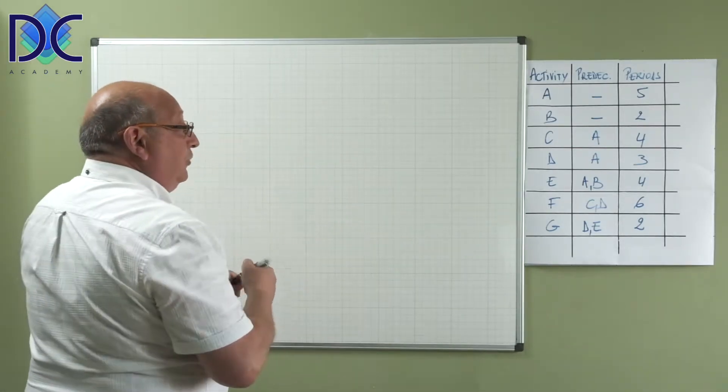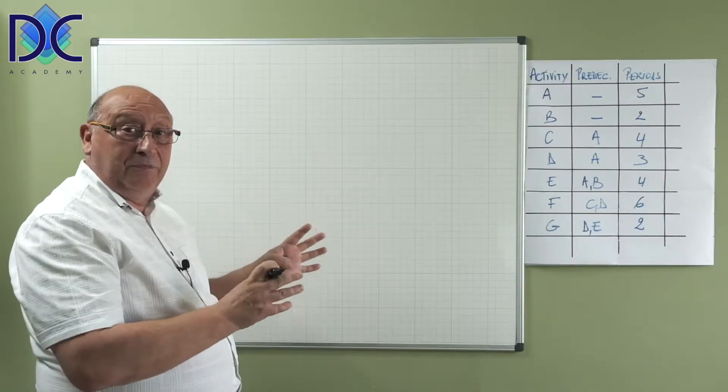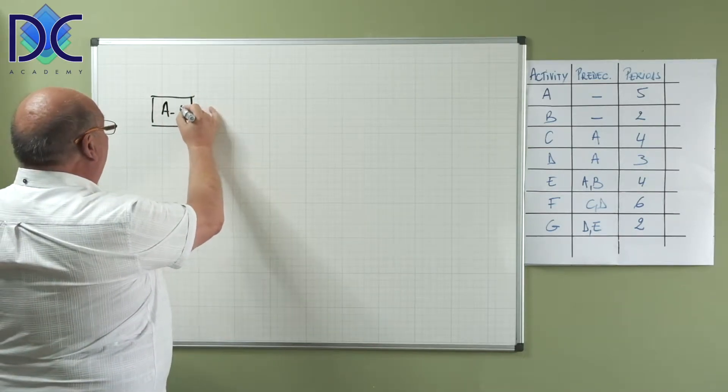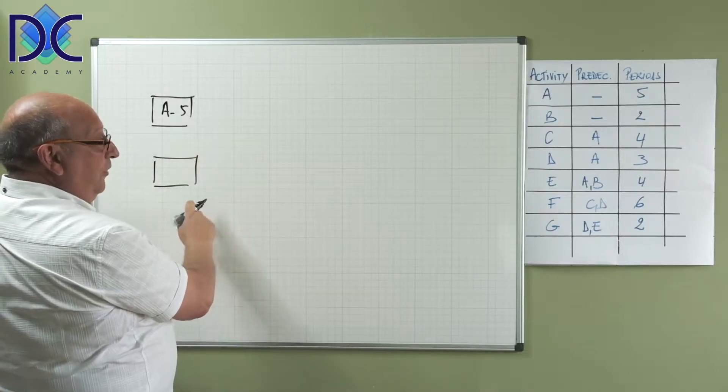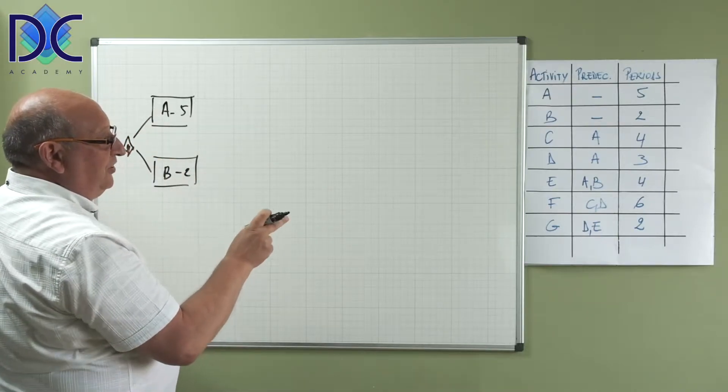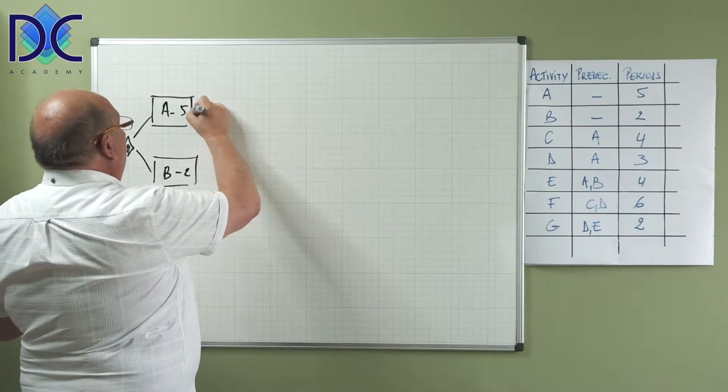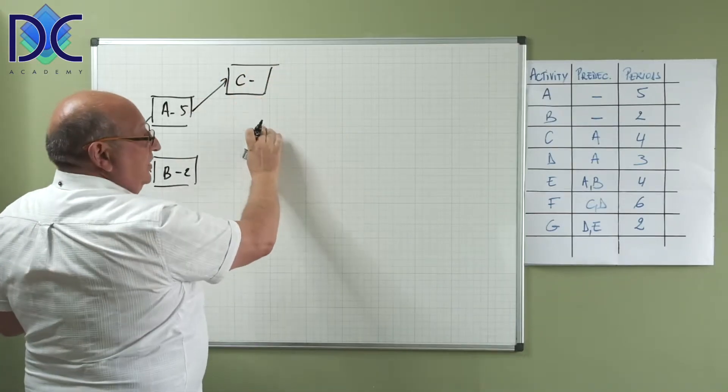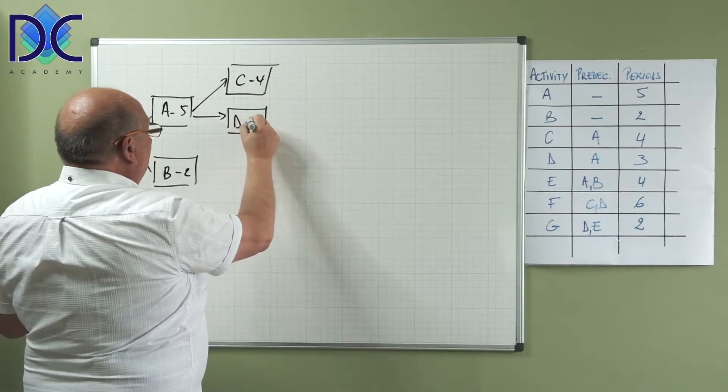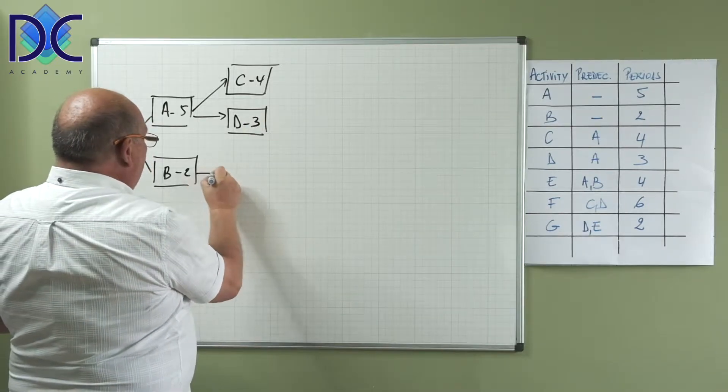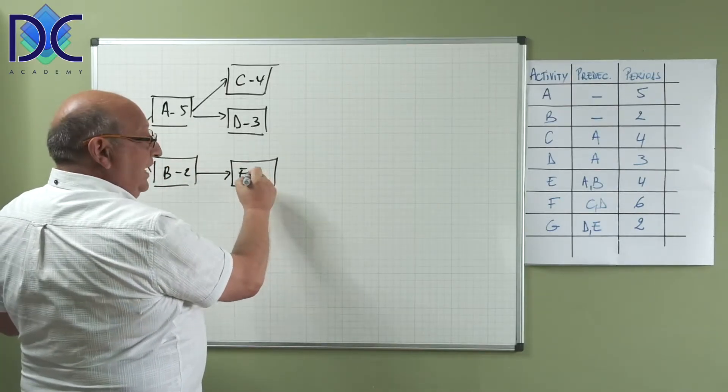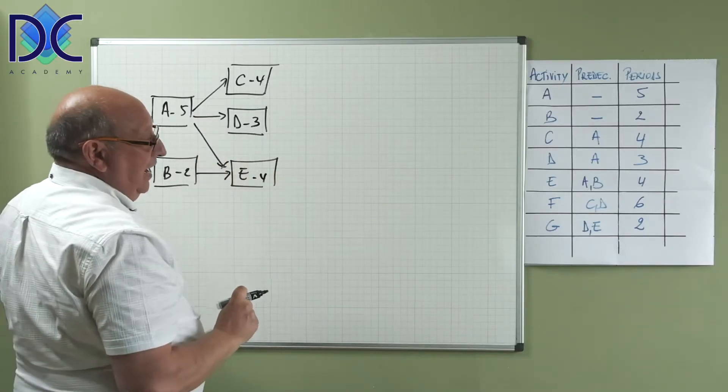Now let's start. We have again the precedence diagram, but you will notice there are some differences. We have A and B, A with the duration of 5, B with the duration of 2. We have the start here, then we have C, then D which are behind A. C with the duration of 4, D also with the duration of 3. We have E, but now E also has A as a predecessor, so we have E with 4, and the graph is a little bit more complex.